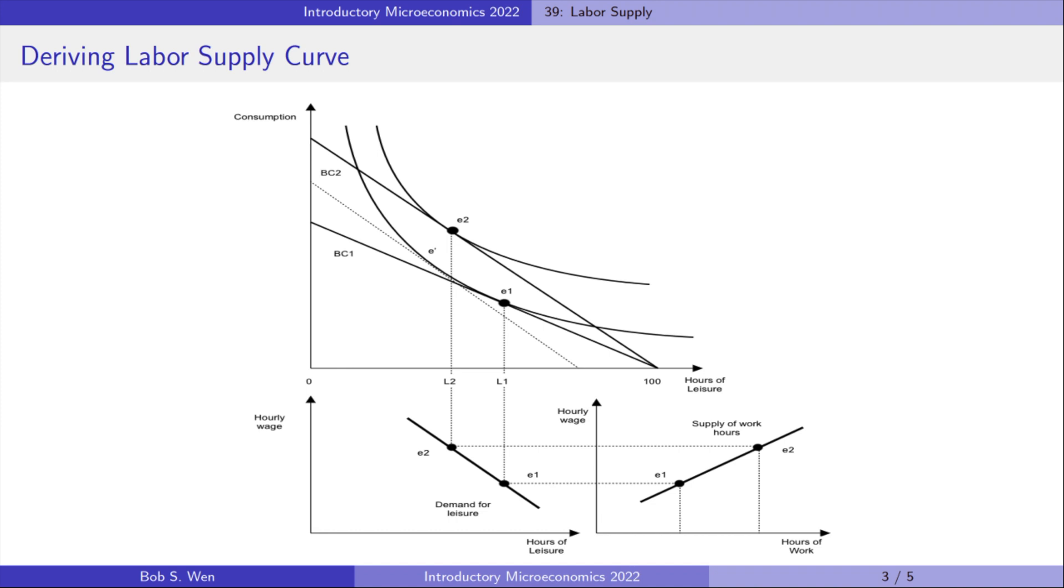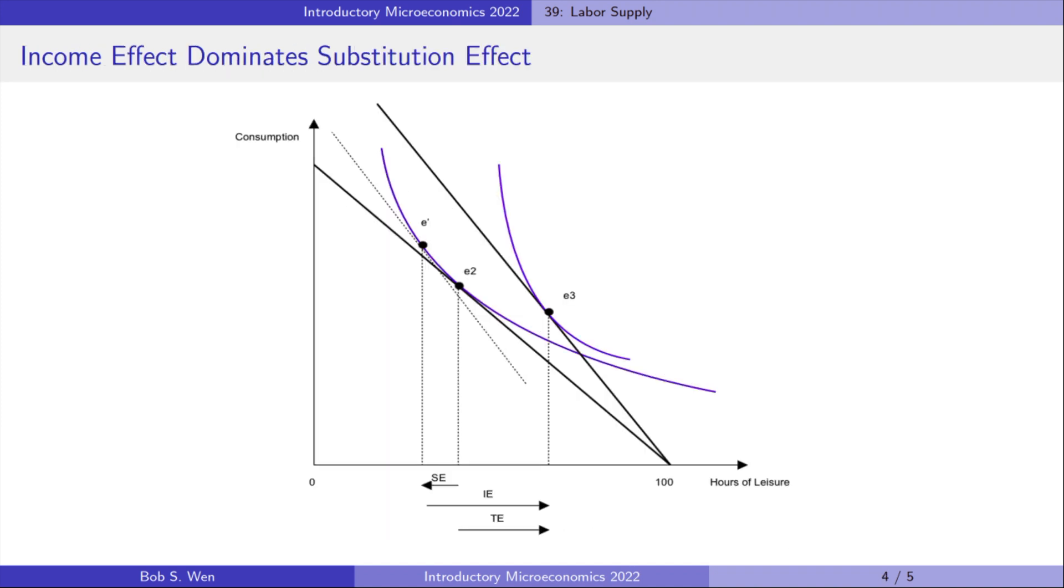Now we know that the labor supply curve is derived from the consumer's optimal bundles of consumption and leisure with respect to the change in hourly wage. The labor supply usually slopes upwards, but the labor supply curve can be backward bending if the income effect dominates the substitution effect in a certain part of the curve.